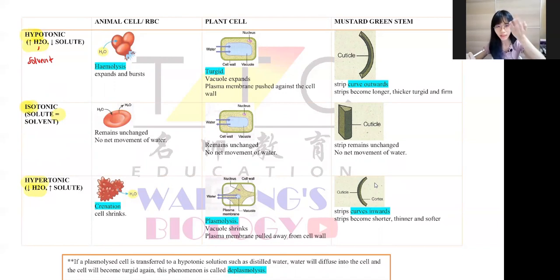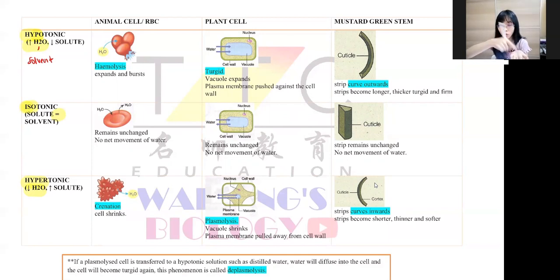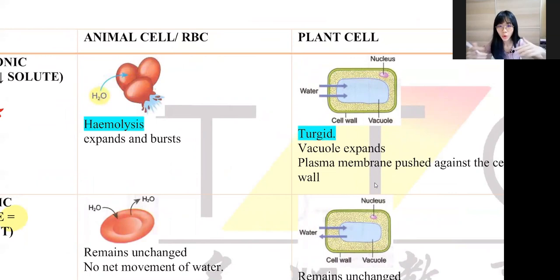When they immerse into a hypotonic solution — the example is distilled water, because distilled water is always 100% water — I have a red blood cell and distilled water. Distilled water has more water, so the water diffuses into the red blood cell. Red blood cell has no cell wall, so when water keeps diffusing into it, the red blood cell is going to burst. We call this hemolysis.